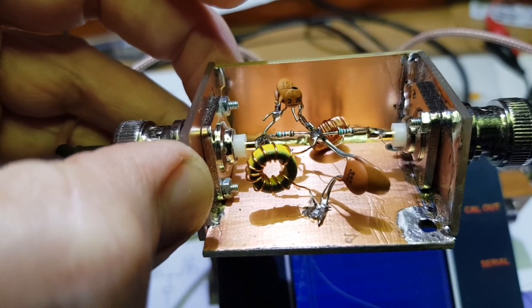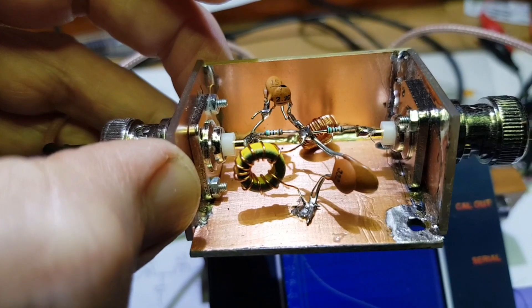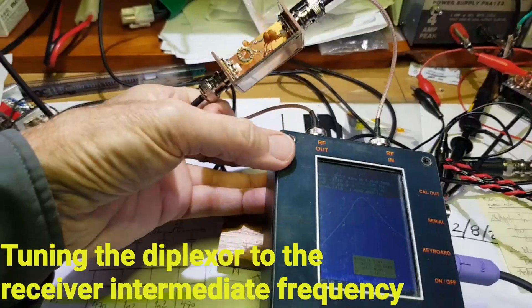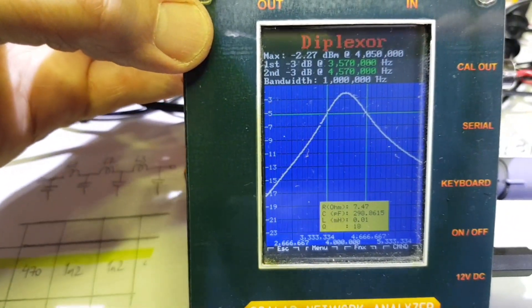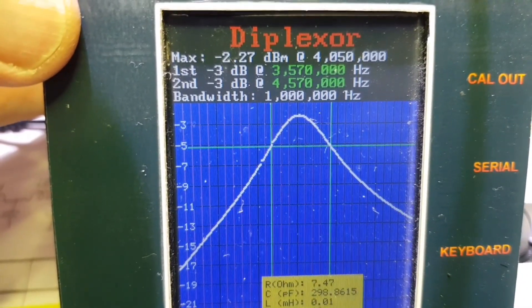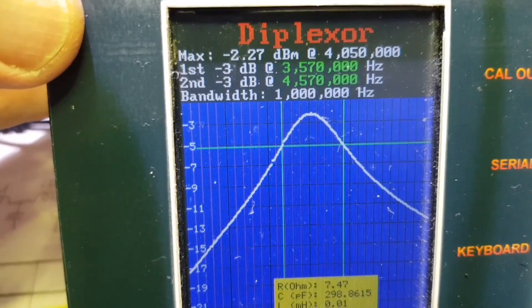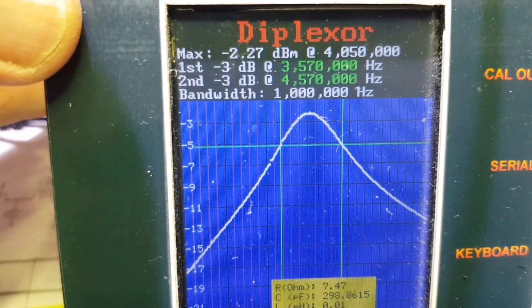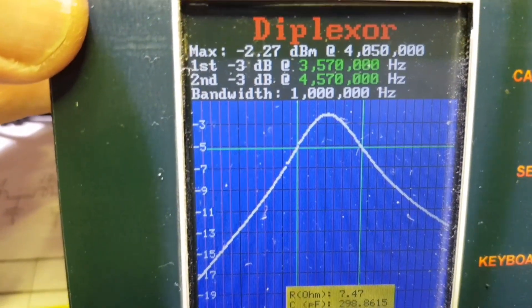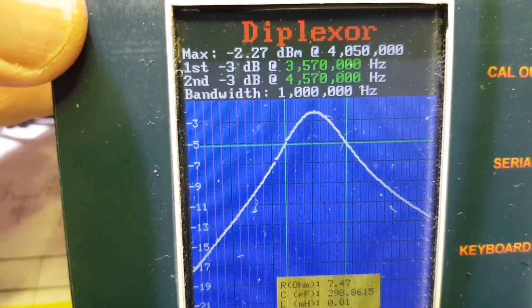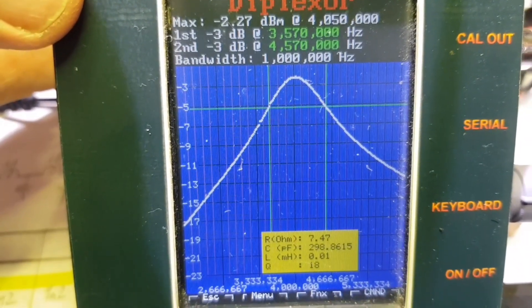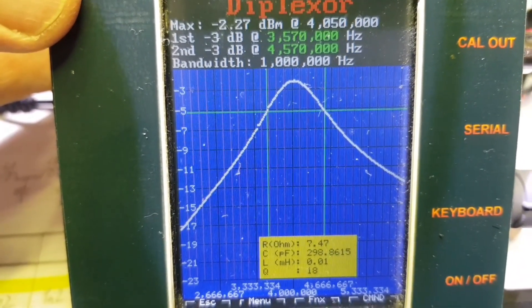Using the trusty scalar network analyzer, here I've set up a script to sweep from 2 to 6 MHz. So the middle of the passband here is coming up at 50 kHz high and an attenuation in the passband of 2 and a bit dB. The minus 3 dB points are a megahertz wide, so it's not particularly sharp.